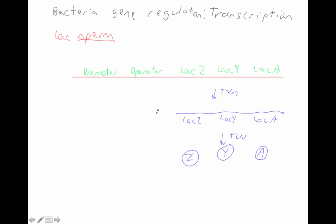Now let's define some of these terms and explain how bacteria will regulate this operon. The promoter will bind the RNA polymerase — I'm going to draw RNAP above the promoter. And when it binds here, it turns on and makes the mRNA for lac Z, lac Y, and lac A. So what's this operator doing here?